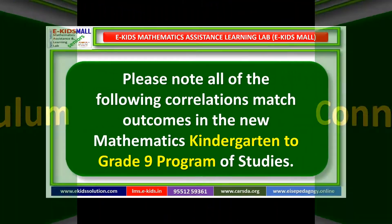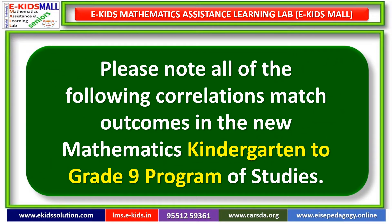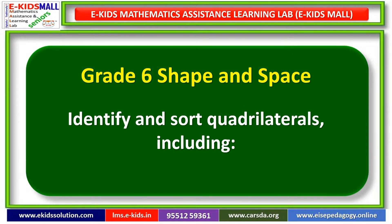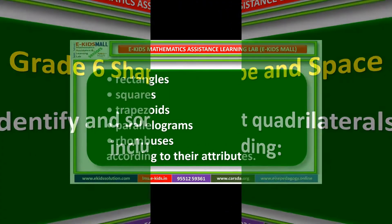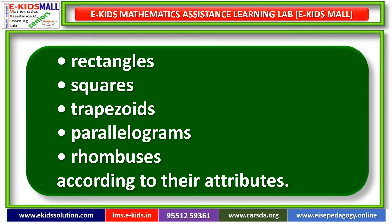Please note all of the following correlations match outcomes in the new mathematics kindergarten to grade 9 program of studies. For grade 6 shape and space: identify and sort quadrilaterals, including rectangles, squares, trapezoids, parallelograms, and rhombuses, according to their attributes.